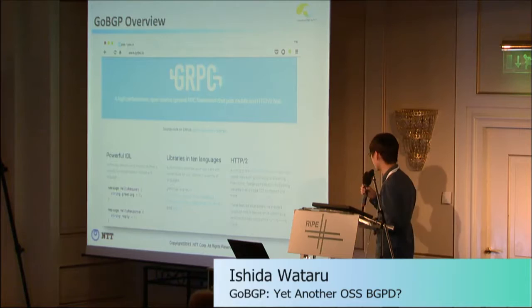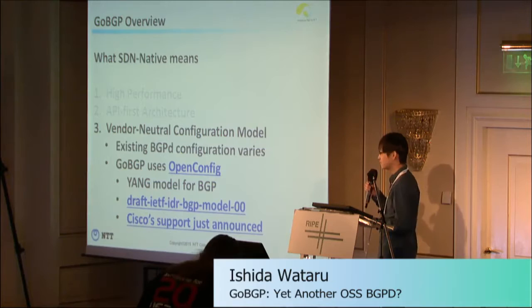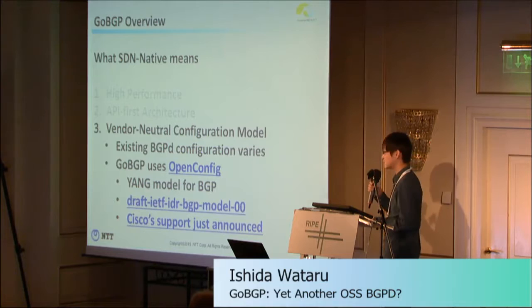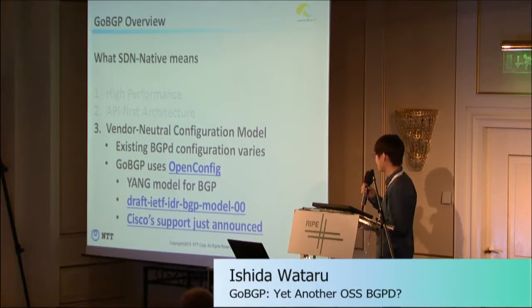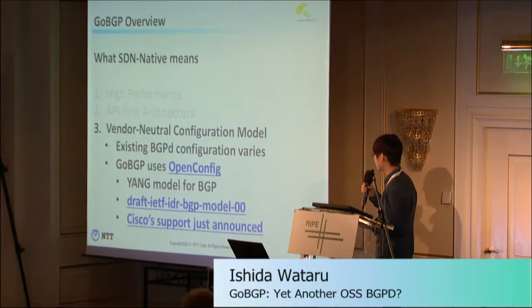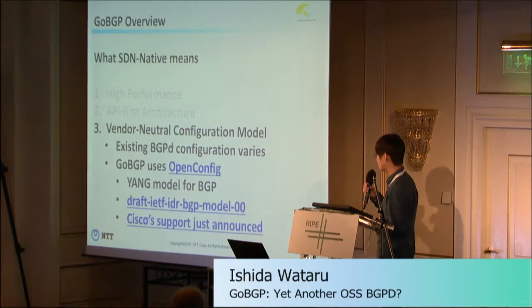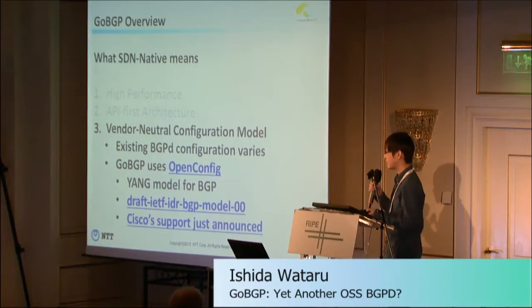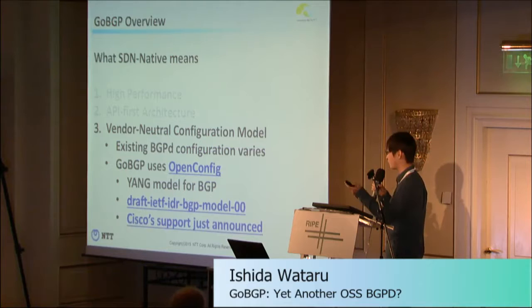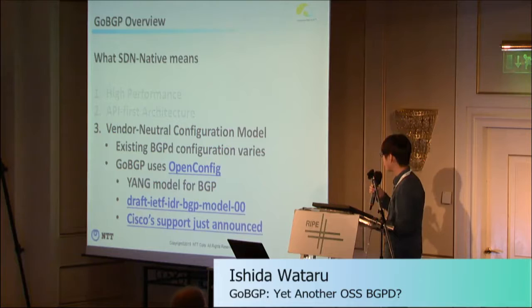The last one is vendor-neutral configuration model. Existing BGP daemon configurations vary, so we decided to use OpenConfig, which is a YANG model for BGP discussed in the IETF. On Tuesday this week, Cisco announced that its IOS is starting to support this OpenConfig configuration model. This means the model is the same, so you can write a script to convert GoBGP's configuration file to Cisco's configuration files, making it easier to switch between different BGP implementations.